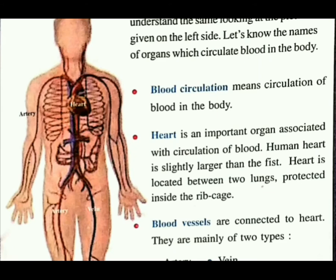Heart is an important organ associated with circulation of blood in the body. Heart हमारे body से जुड़ा हुआ है — heartbeat यानि उससे हमारे body की जो क्रिया होती है, उसी से हमारा body चलता है, हम जी पाते हैं — यह एकदम important अंग है. Human heart is slightly larger than the fist — वो हमारे मुट्ठी की तरह एक heart होता है जो हमारी मुट्ठी में भी आ सकता है — यह heart हमारी body को जीवित रखता है.